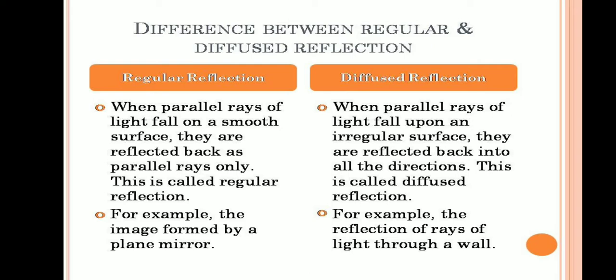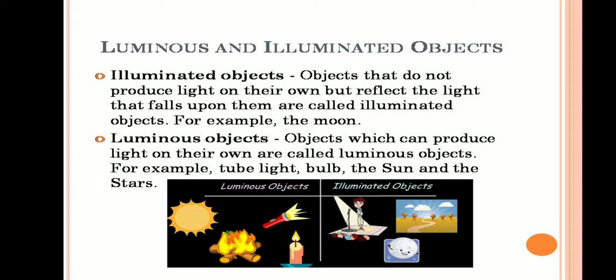Luminous and illuminated objects. A luminous object is any object which has the capability of producing its own light. For example, the sun, stars, bulb, and tube light. An illuminated object is a non-luminous object — an object which does not produce its own light but reflects the light that falls upon it.